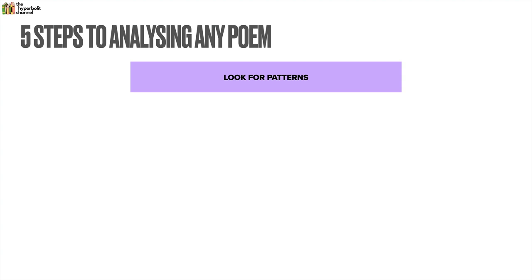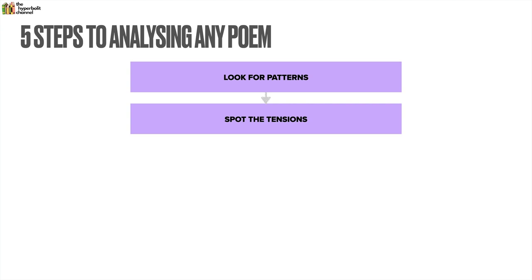The first step is to look for patterns. These could be patterns in terms of words — meaning repeated words — or similar structures like parallelism, or sounds that you hear. When we're thinking about patterns, we're really looking at things like rhyme, repetition, parallelism, etc. After you look for patterns, you need to look at the other side: you've got to spot the tensions. Tension is an umbrella term for anything that sticks out — any sort of conflict, contrast, or irony. These are all examples of tension.